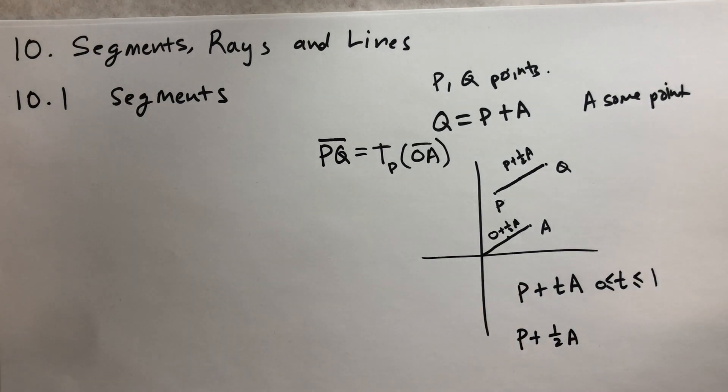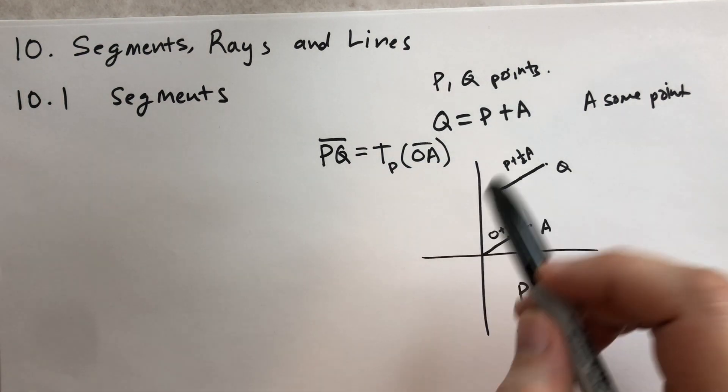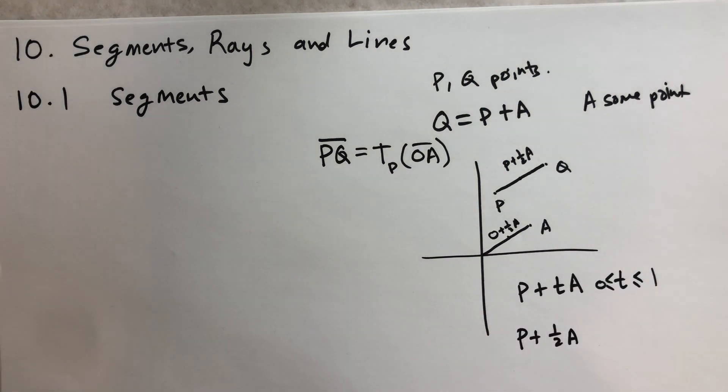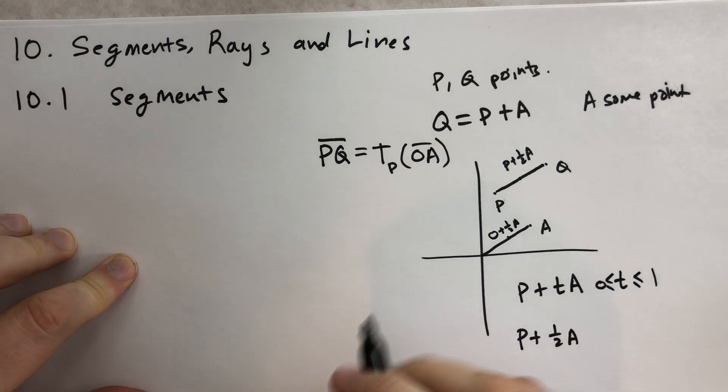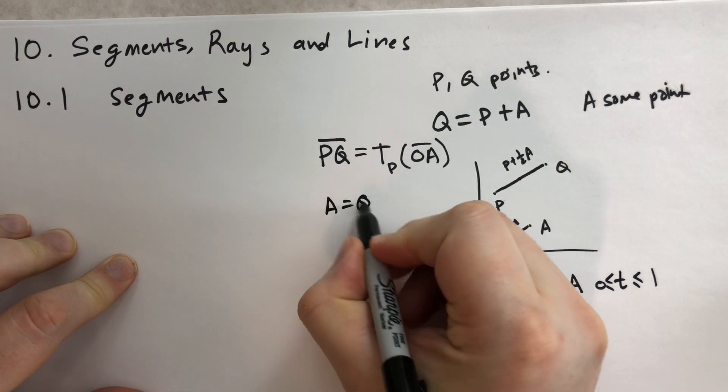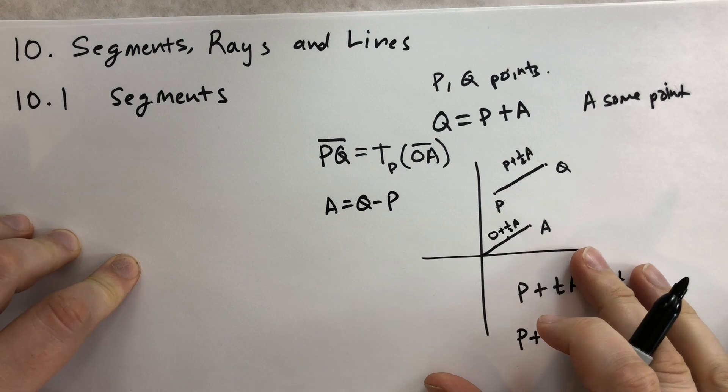The definition of a line segment PQ is equivalent to the translation through P of the line segment OA. We can write it out that way as well. The line segment PQ is the image of the line segment OA translated under T, translated from origin to P.